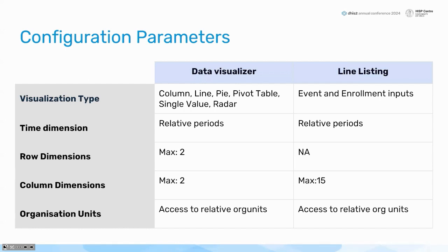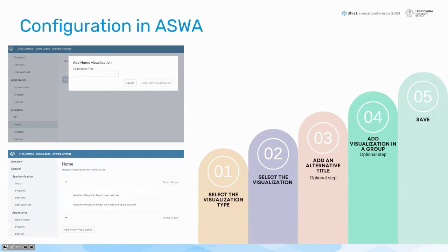For the data visualizer, there are columns, lines, histograms, pivot tables, single values, and radar. For the linear list, there are events and enrollment entries. Regarding time dimensions, we use relative periods. For the data visualizer, there is a maximum of two row dimensions. For the linear list, there is no maximum. For column dimensions, it's also two for the data visualizer.